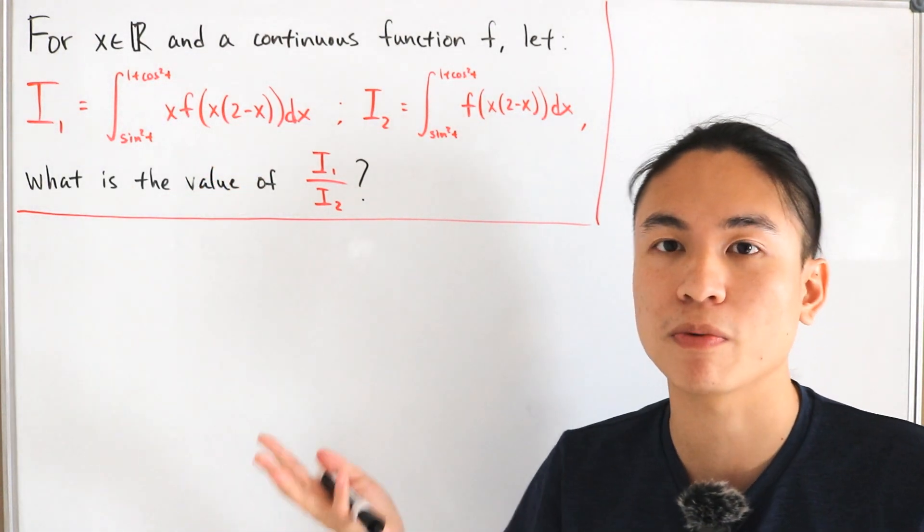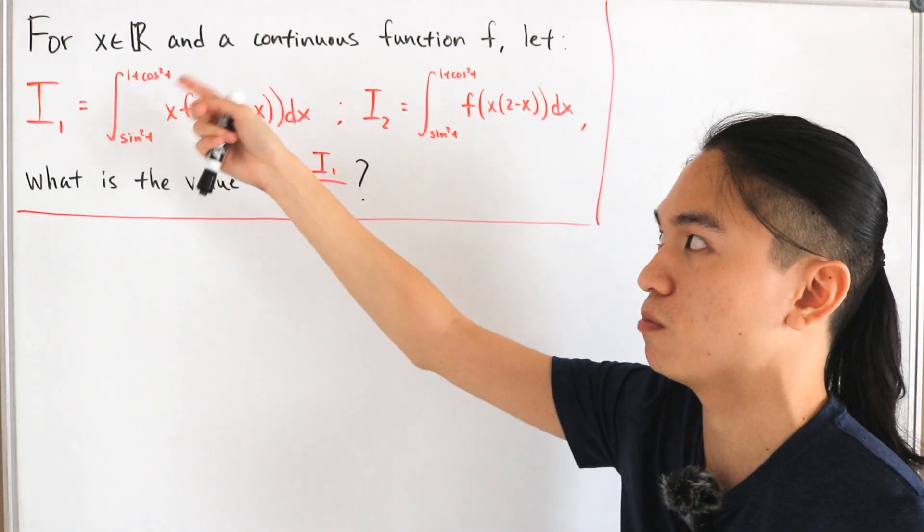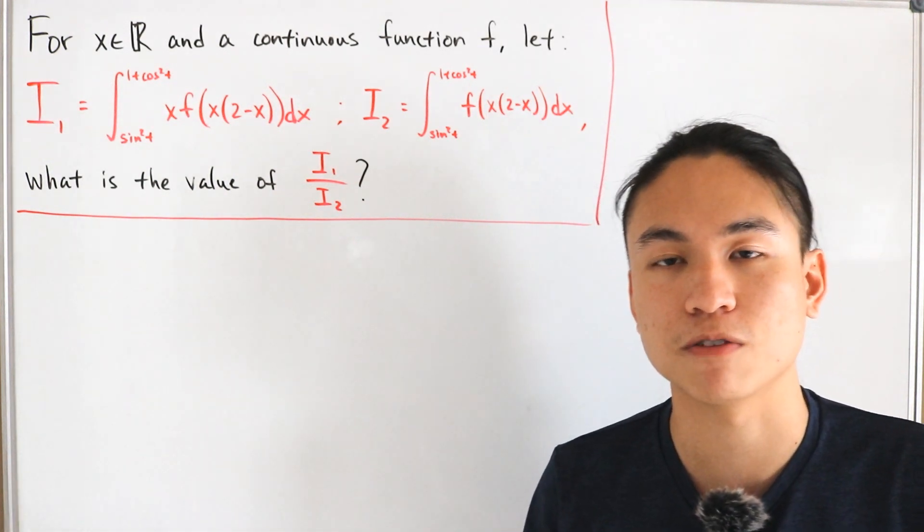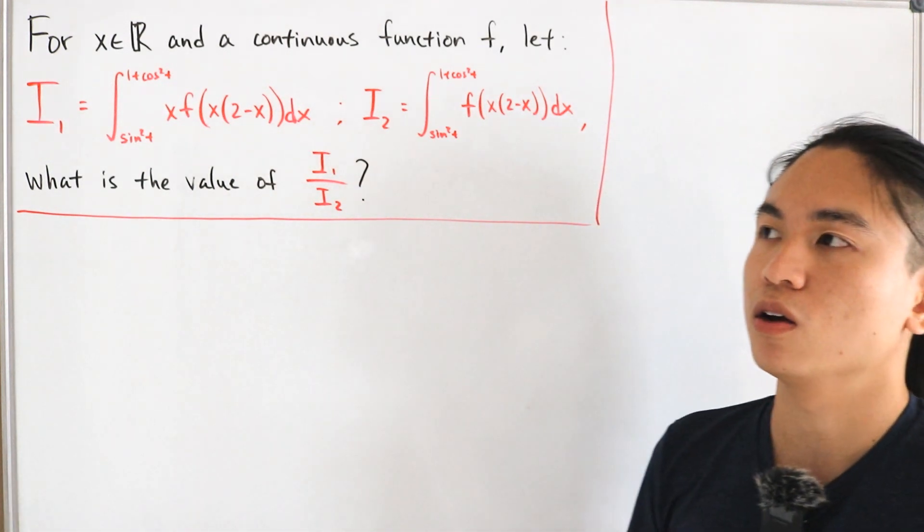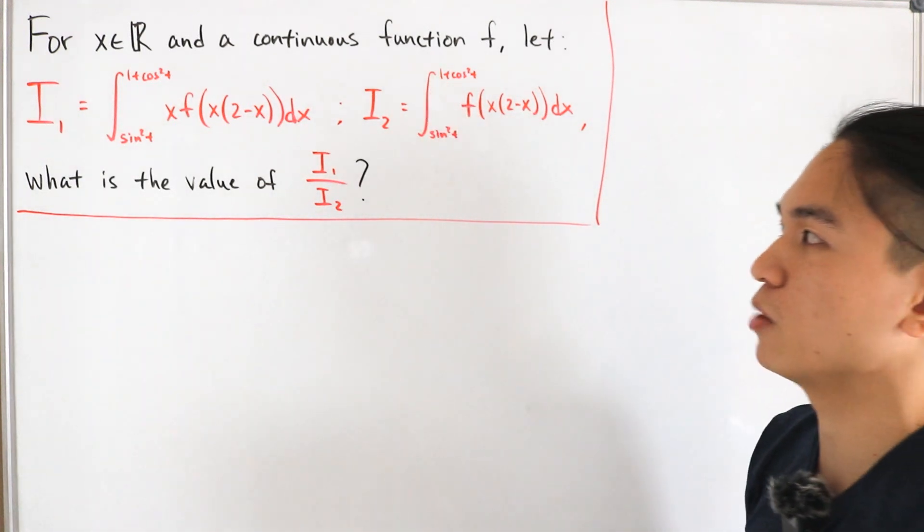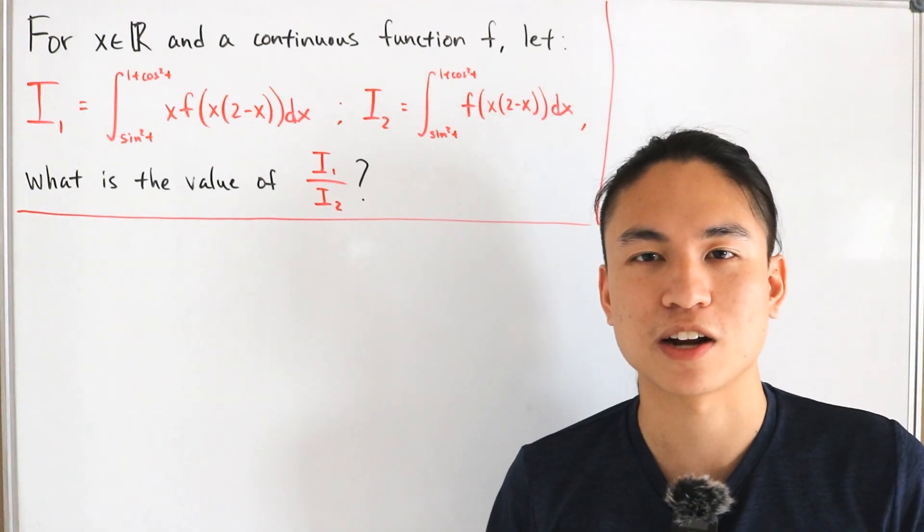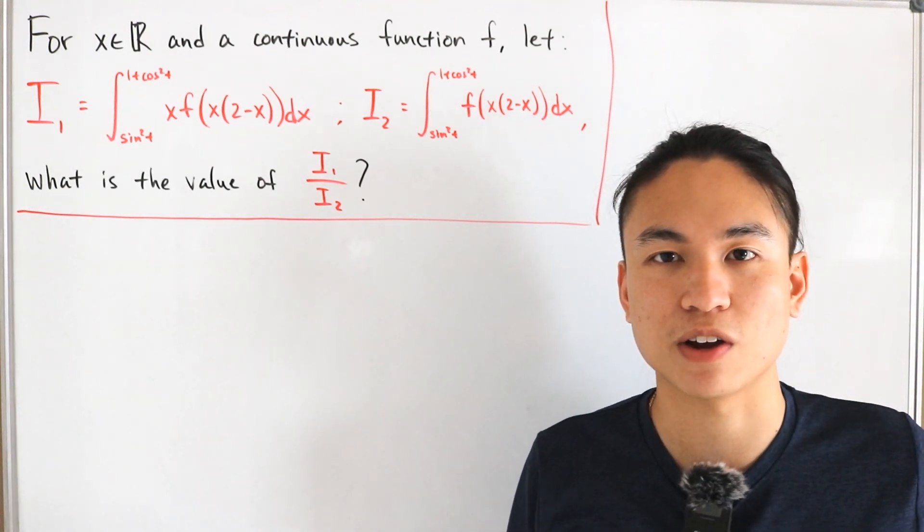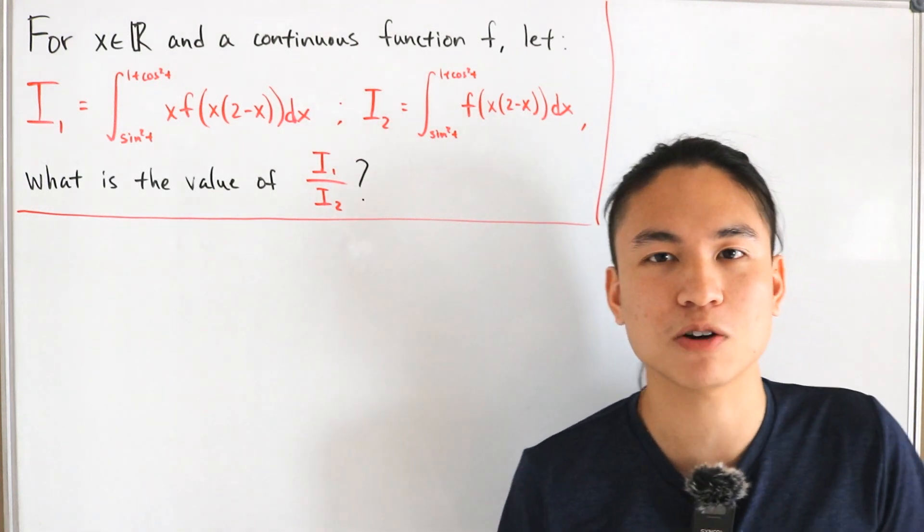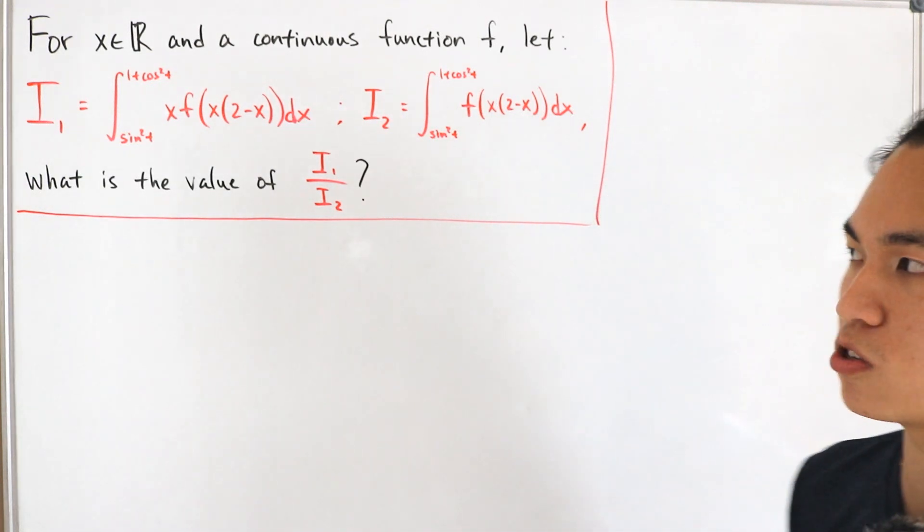And of course, you can see with that formula, because we have sine squared t and 1 plus cosine squared t, we also need another identity with the fundamental trigonometry. Again, this is a very short integral puzzle that I think it's worth testing your mind outside the boundaries. So let's actually just get started.